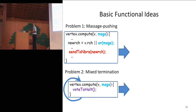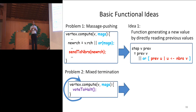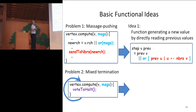I'd like to introduce the basic ideas to solve these two problems: message pushing style and mixed termination. For the first one, instead of writing a procedure that receives a message to update something, we ask the user to write a function that generates a new value for the given vertex. In this computation, you can directly read the values of your neighbors. We want to use this style because the lookup of data and use of data are very close in the code, making it very easy to read.